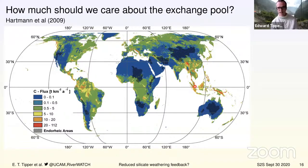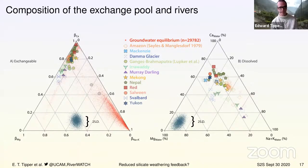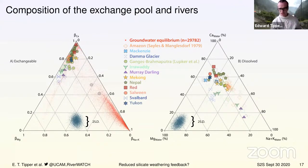With our team, we've been fortunate to collect samples from many river systems: the Yukon and Mackenzie in Canada, the Red River in Vietnam, the Mekong across multiple countries, the Salween and Irrawaddy in Myanmar, and major Ganges tributaries in Nepal. We compare these to literature data from the Ganges-Brahmaputra and the Amazon to build a global picture of the exchange pool and its effect on silicate weathering.